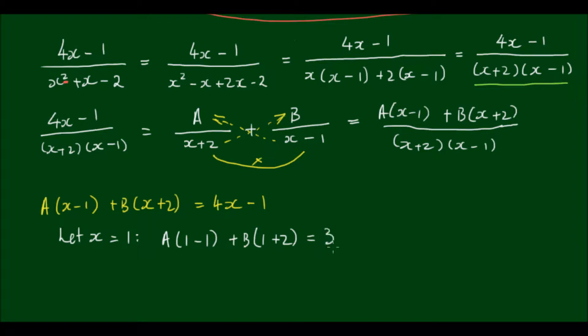And what this does, it actually eliminates A because 1 minus 1 is equal to 0. And I'm left with 3B is equal to 3, and so therefore B must be equal to 1.